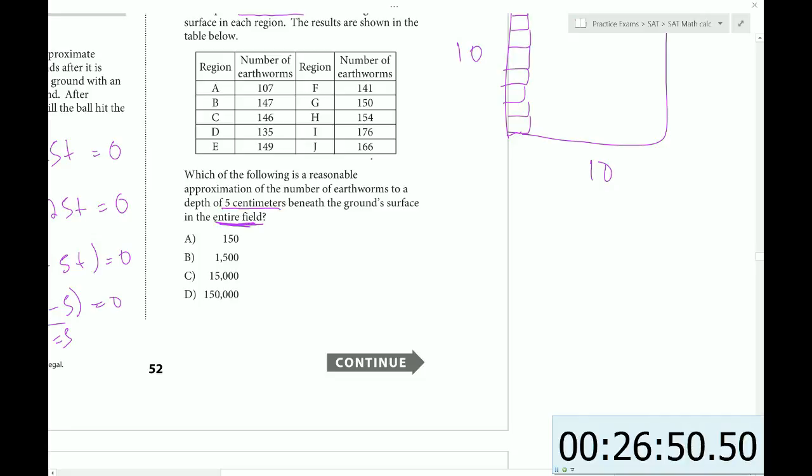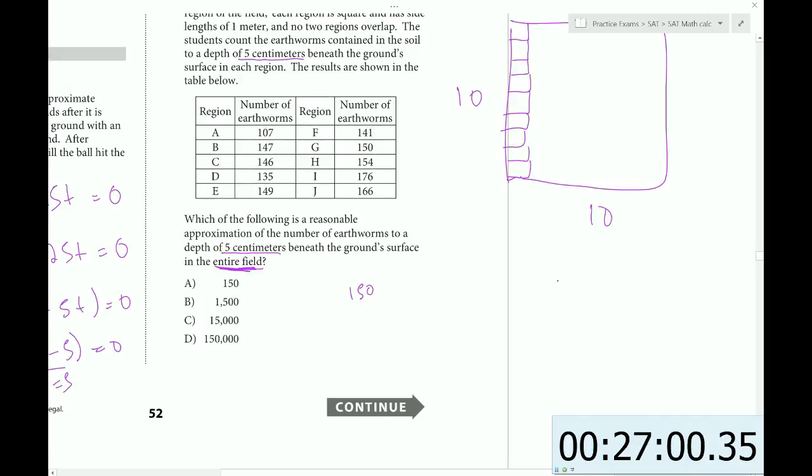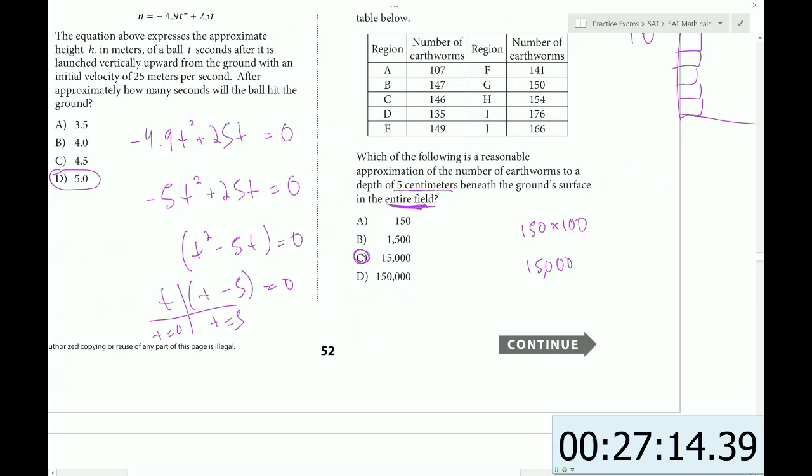So whatever numbers that they got, the total of that would be approximately 1 tenth. So we'd have to multiply that by 10. Now, on average, we can approximate an average of about 150 earthworms in each region. And there are 100 regions. So I have to multiply this by 100. And then that gives me 150 with two extra zeros. So 15,000 earthworms in the entire field.